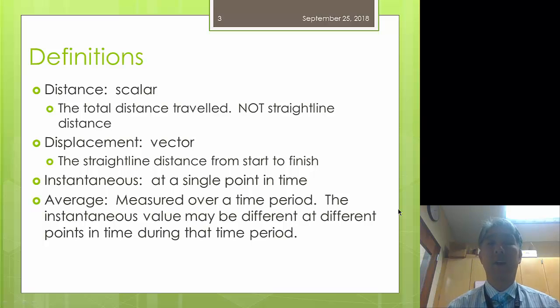Displacement on the other hand is a vector. This is the straight line distance from start to finish. So if I ran around the same track one full lap, my displacement in this case is actually going to be zero meters.